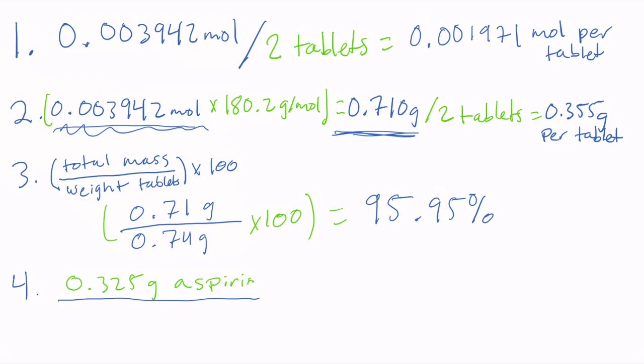Now, because we're using one tablet here, we're going to take this number, but we're going to divide it by two. So for me, that would be 0.37 grams. Again, we are going to multiply by 100. And I'm going to get 87.84% aspirin. So this is how much aspirin the manufacturer says the tablet contains.